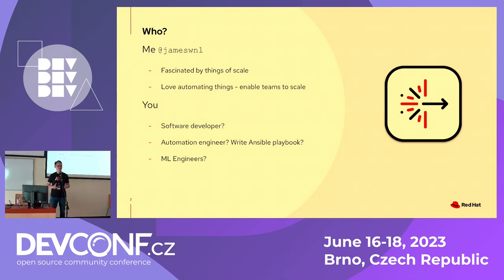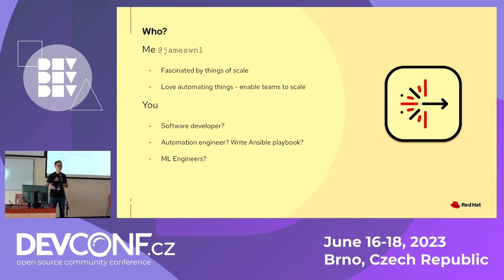So first of all, I'd like to introduce a little bit about myself. That's my Twitter. And I'm fascinated by two things. First of all, things of scale — a system that processes a huge amount of data or requests with sustained performance. And the second thing is I love automating things. I hate people doing tedious tasks and making mistakes because they have to do boring stuff. It's also about scale — once you get rid of all these tedious, easy-to-make-mistake things, the team can move much faster.